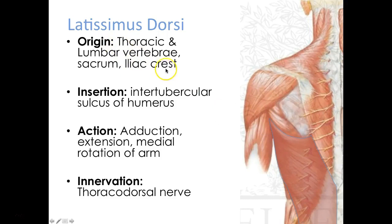Latissimus dorsi inserts onto the intertubercular sulcus of the humerus. Remember, you do not have to know the origins and insertions for your theory or practical exam — I'm giving you these just to help you understand the attachments and location of the muscle a bit more. The action is adduction, extension, and medial rotation of the arm. Innervation we'll go with branch of the brachial plexus.